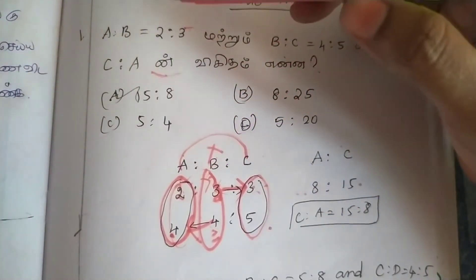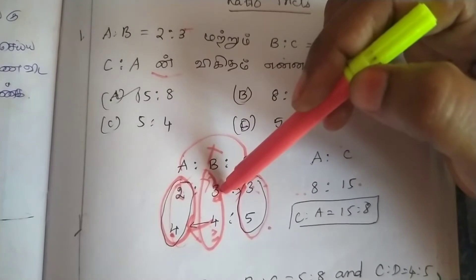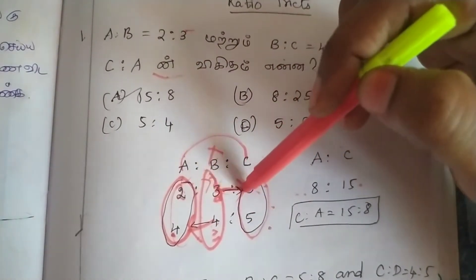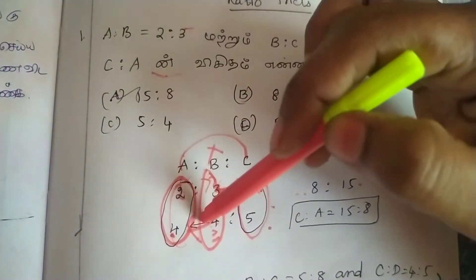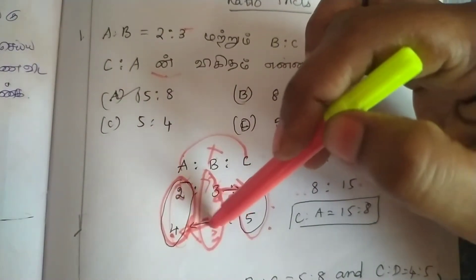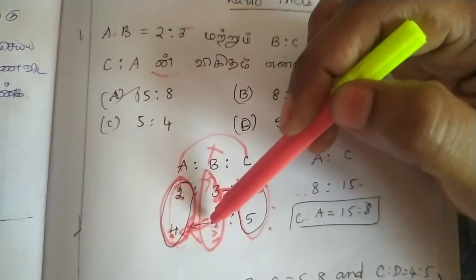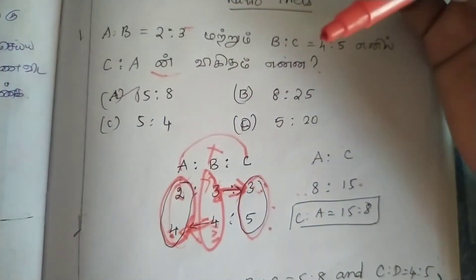A is to B is to C, 1, 2, 3, and 4, 5. A is to why? 2. A is to why? 3, A is to why?